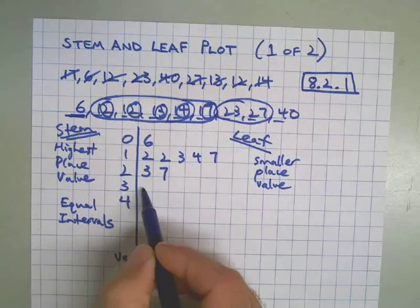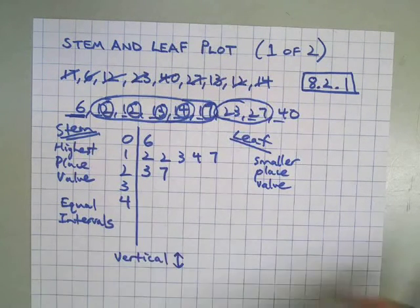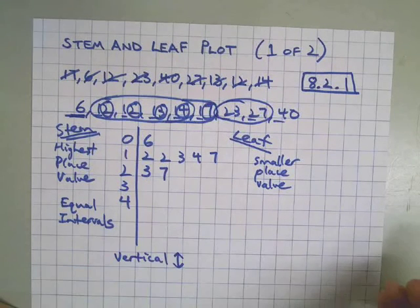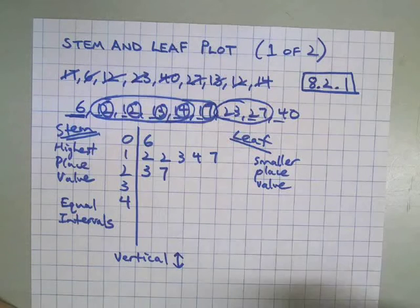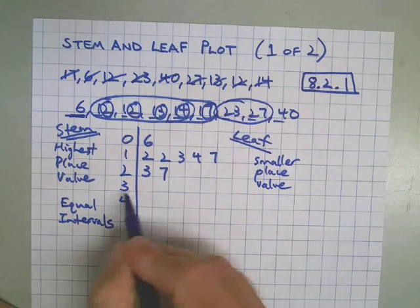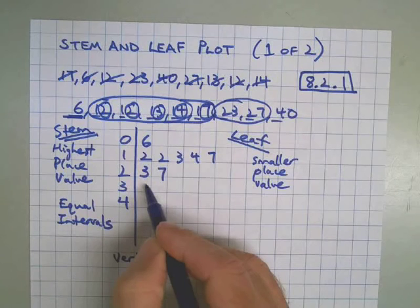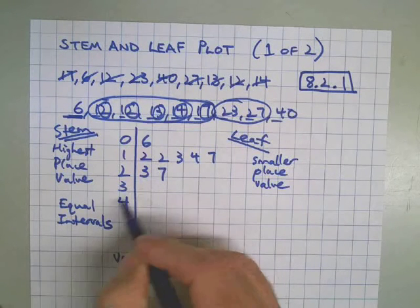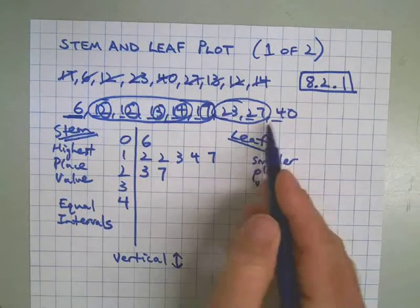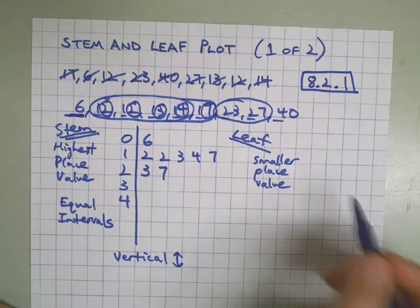We have no numbers in the 30s, and so we leave that blank. If I put a 0 there, which some people will do to say there's no numbers in the 30s, well, once you do that, then what do you have? You actually have 3, 0, which makes 30, and there's no 30 up here. So we just leave it blank.